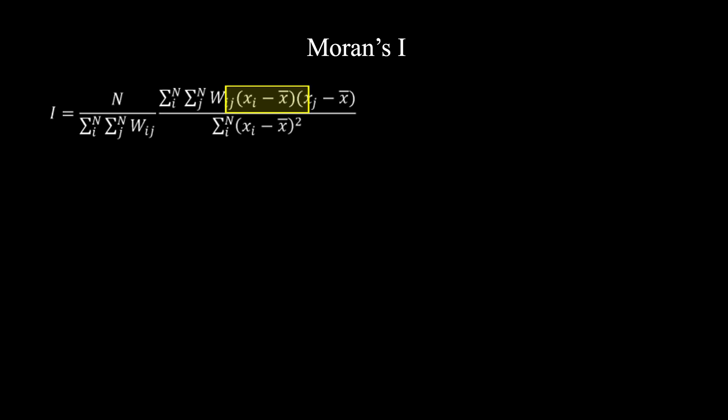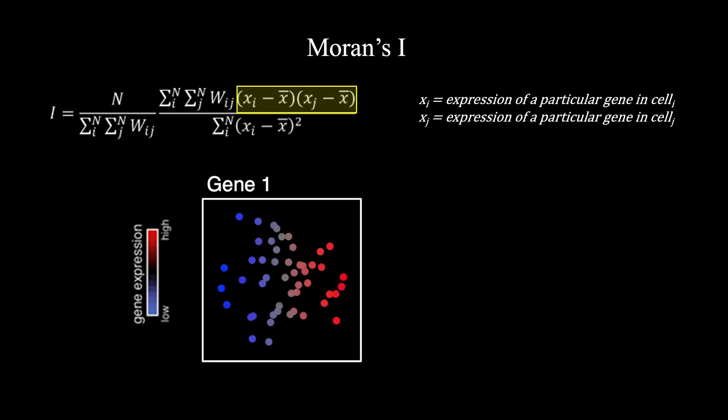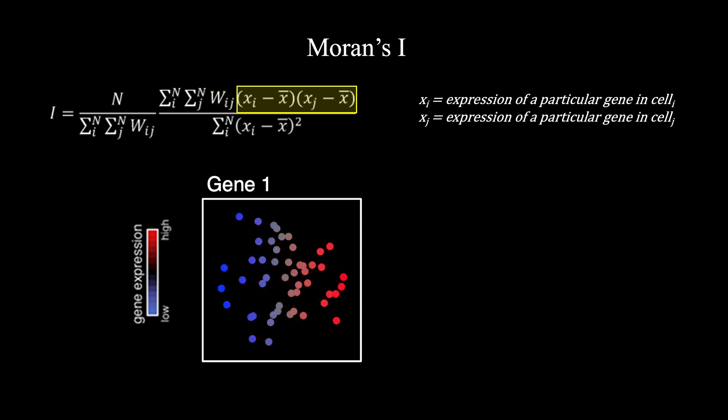Now let's consider a single gene, gene 1, which visually looks quite spatially coordinated in its expression pattern. Let X_I be the expression of this gene in cell I, and X_J its expression in cell J, with X-bar as the average expression across our n cells. Note that in the Moran's I statistic, W_IJ is multiplied by (X_I minus X-bar), multiplied by (X_J minus X-bar), and summed across all combinations of cells I and J.